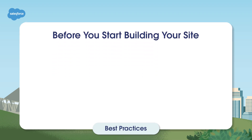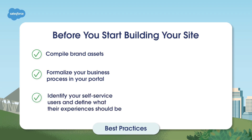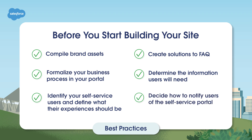Now that you have the full rundown of Experience Cloud, here are some best practices to keep in mind before you start building your site. Compile your brand assets ahead of time, including your logo, header, and color scheme. Formalize your business process and carry it through to the portal — your service agents should have access to the same frequently asked questions as your customers. Identify your self-service users and define what their experience should be. Create solutions to answer your most commonly asked questions. Determine the information your users will need to answer their own questions and log cases. Decide how to notify your users of the self-service portal.